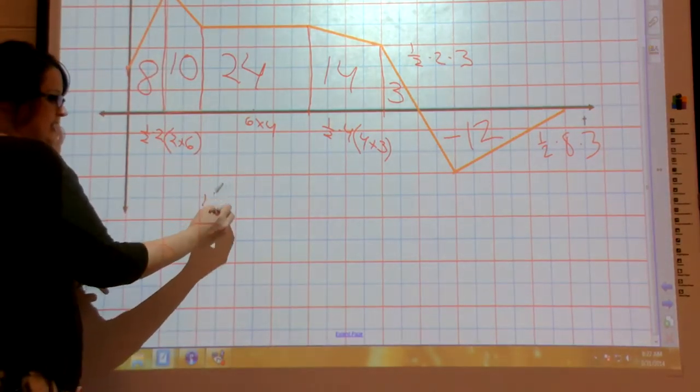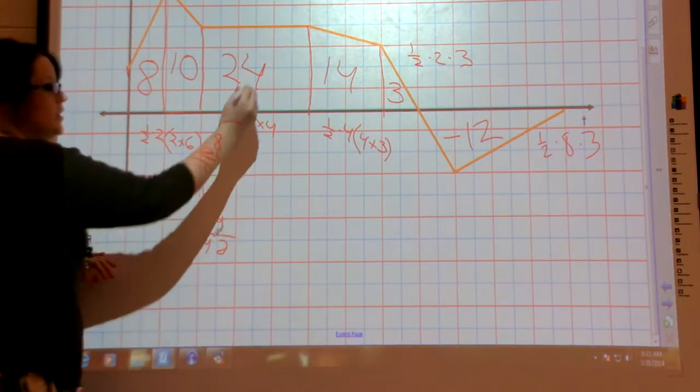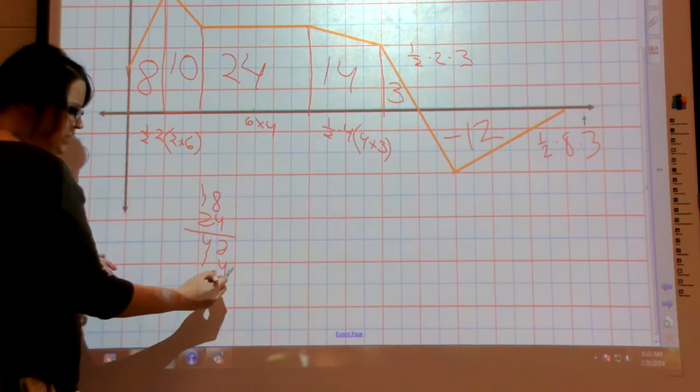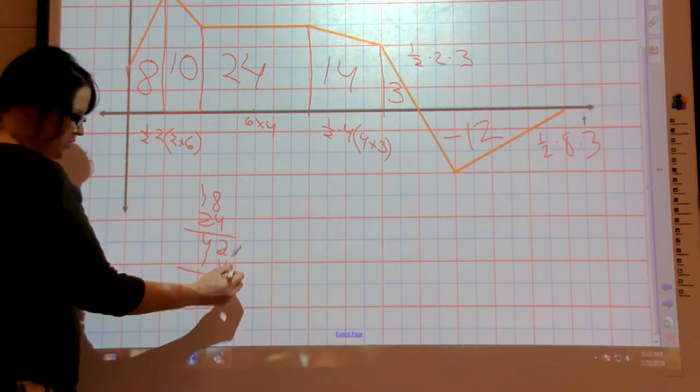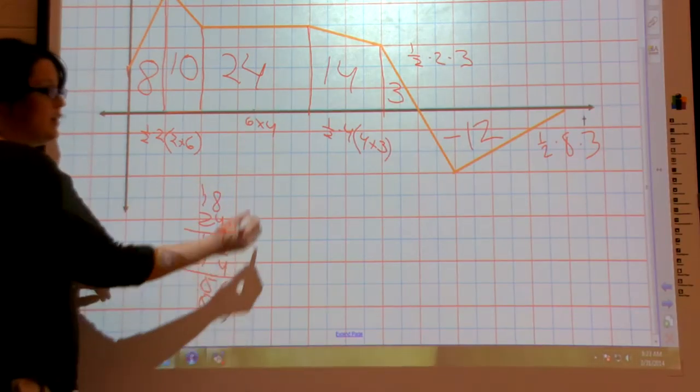Now to give me 18 plus 24 plus 4... is that 14? What does that say, 2? Plus 3 minus 12.